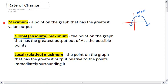Our other option is a local or relative maximum, and that's the point on the graph that has the greatest output relative to the points immediately surrounding it.